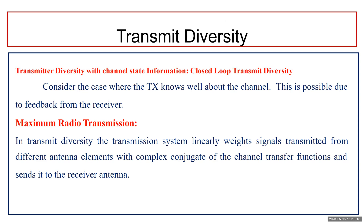The first situation we consider is the case where the transmitter knows the channel well. This is possible due to feedback from the receiver, obtained from the reciprocity principle. In this case, there is a complete equivalence between transmit diversity and receive diversity. The optimum transmission scheme used is Maximum Ratio Transmission, where signals transmitted from different antenna elements are linearly weighted with the complex conjugates of the channel transfer functions from each transmit antenna element to the single receiving antenna element.